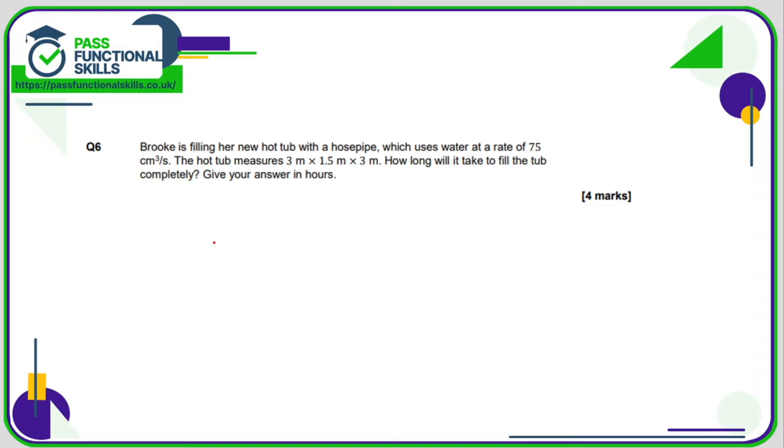Question number six, we've got to be a little bit careful here because the rate that it's being filled up by is in cubic centimeters, but the hot tub has measurements of meters. So what I'm going to do is convert these meters into centimeters, so it's going to be 300 times 150 times 300. So therefore the volume or the capacity of the hot tub is going to be 13.5 million cubic centimeters.